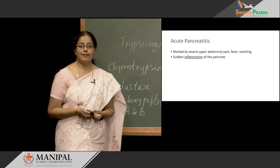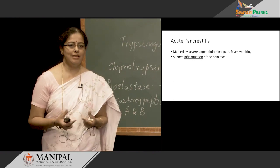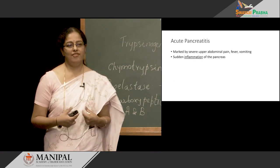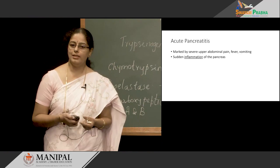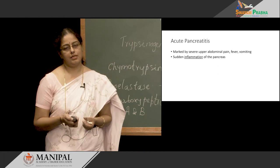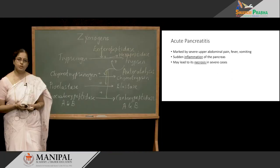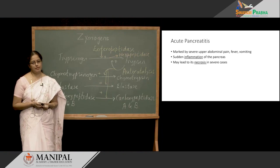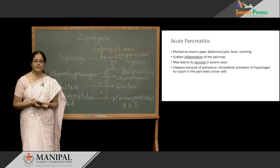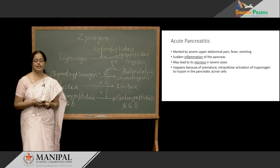In acute pancreatitis, the patient presents with severe abdominal pain, fever, and vomiting, and all these symptoms increase on food intake. Sudden inflammation of the pancreas is responsible for this condition, and in severe cases it can lead to necrosis of the pancreas. What happens here is trypsinogen gets activated to trypsin in the acinar cells themselves — there is premature activation of trypsinogen in the pancreas.